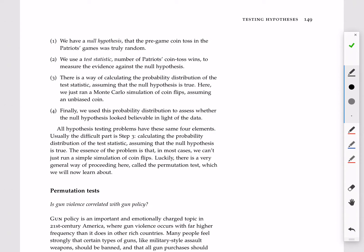Step three, we calculate a probability distribution for that test statistic, that is the number of Patriots wins, assuming that the null hypothesis is true. And the way we did that here was pretty straightforward. We ran a Monte Carlo simulation, 10,000 different times of 25 coin flips each, assuming an unbiased coin.